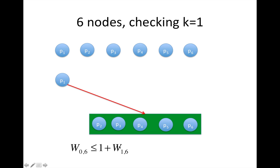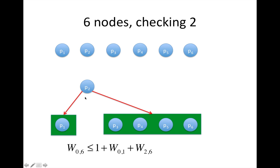So w06 is at most this, right? It can't be bigger because this is one solution and we're looking for the best solution. If we choose two to be in the root, we get the sum of one plus w01 plus w26.